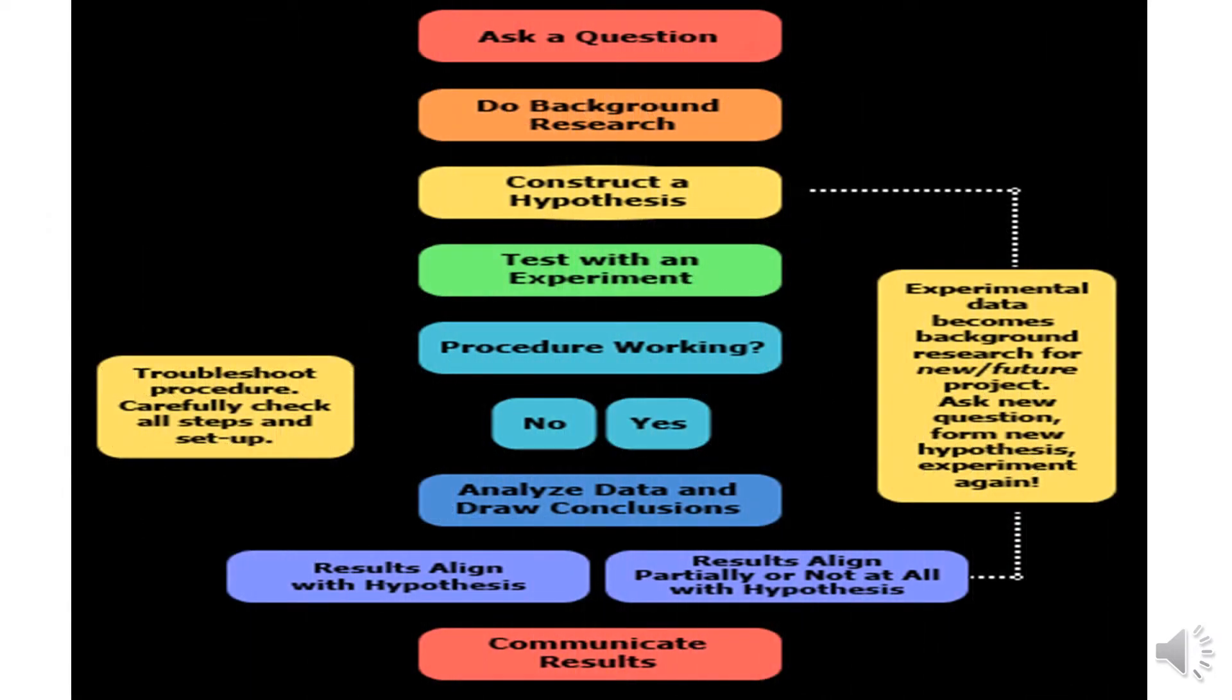Even though the scientific method is a series of steps, we must keep in mind that new information or thinking might cause a scientist to back up and repeat steps at any point during the process. A process like the scientific method that involves such backing up and repeating is called an iterative process.